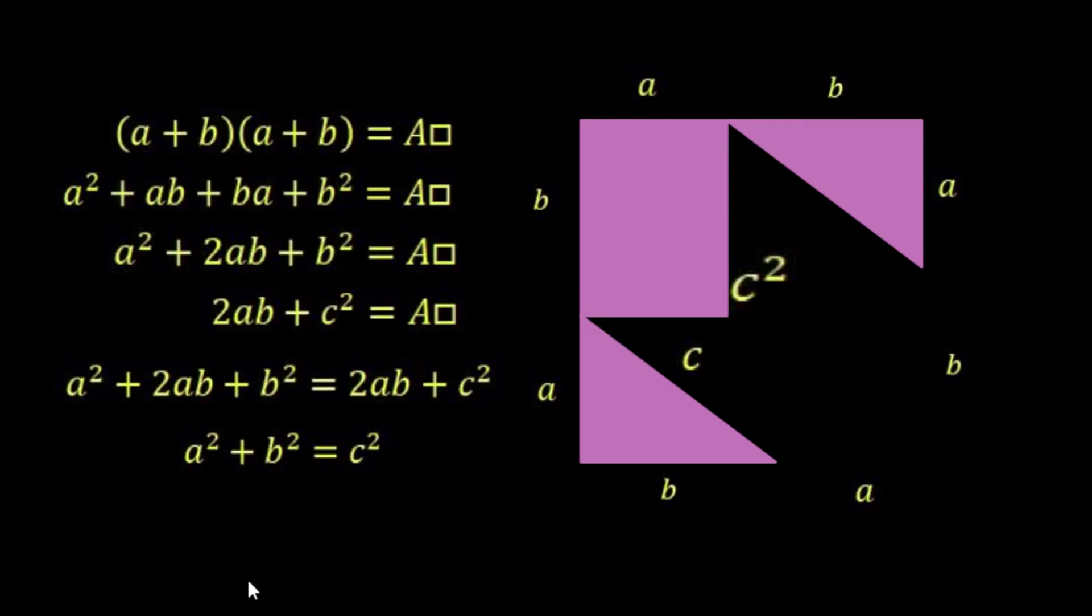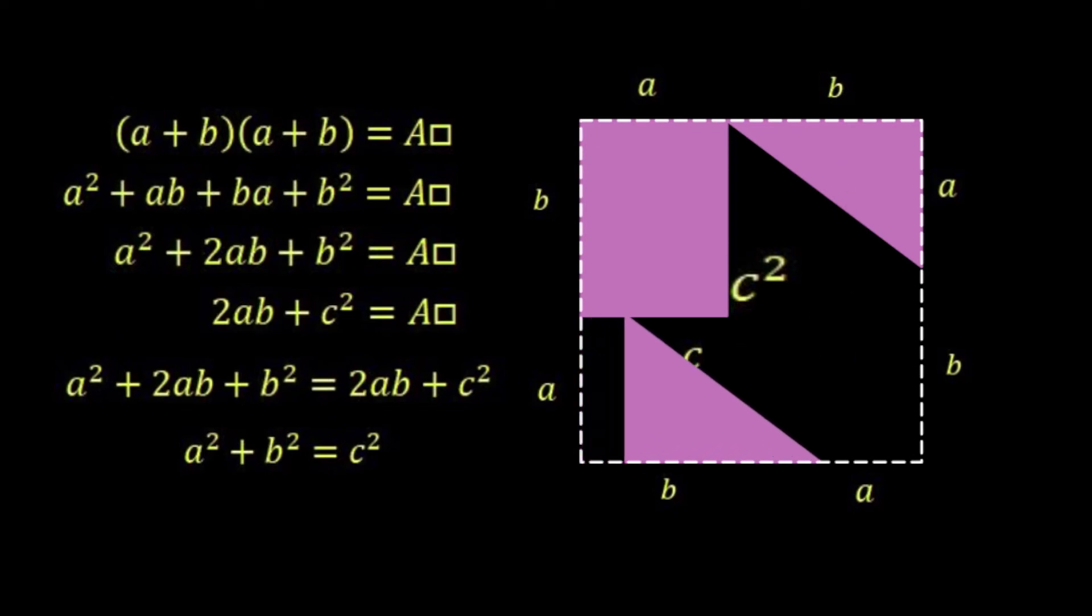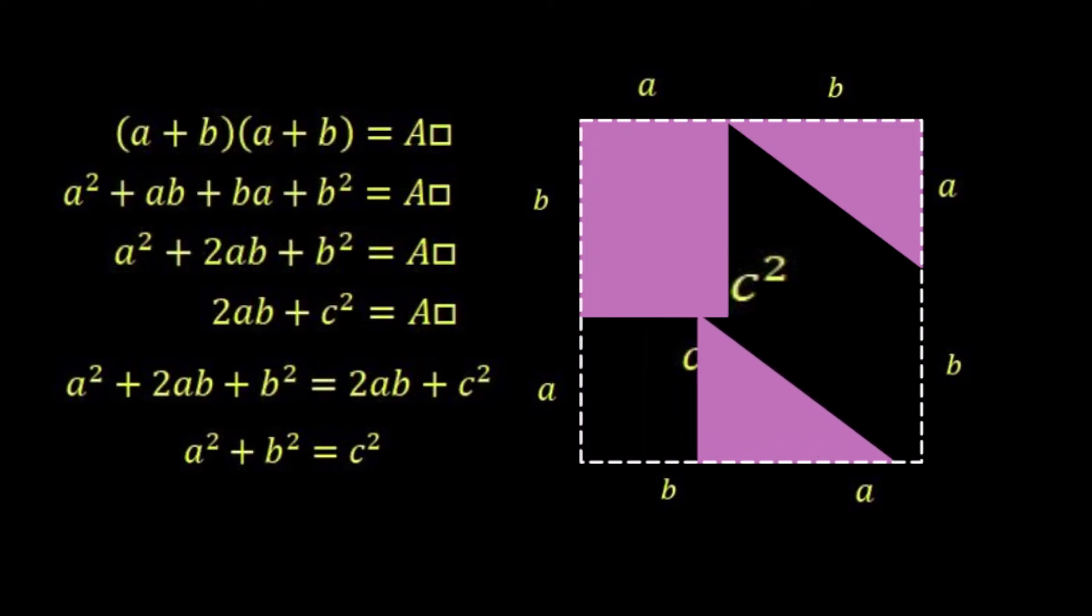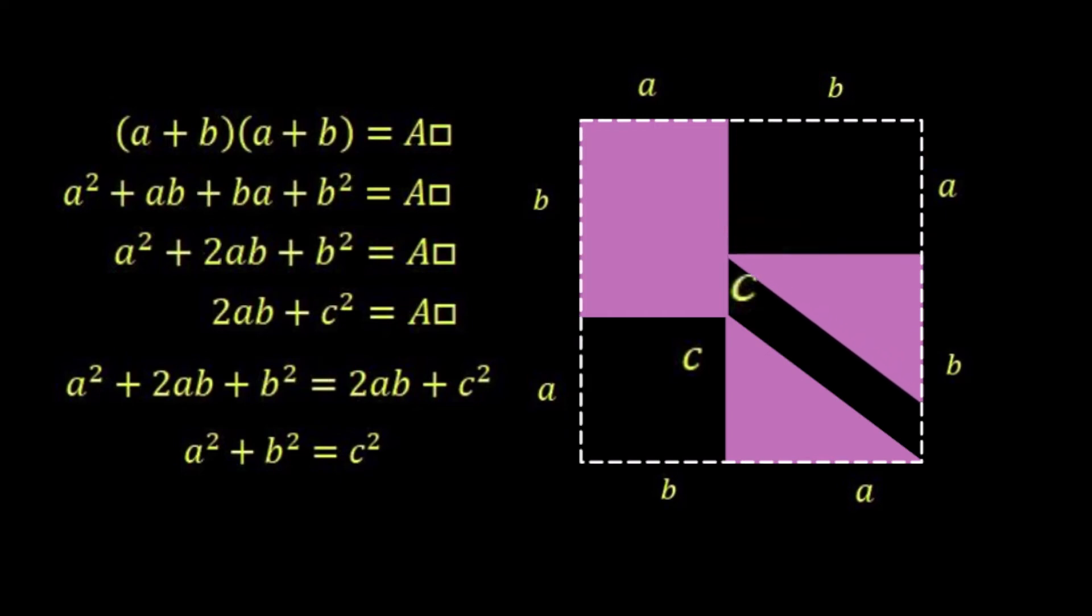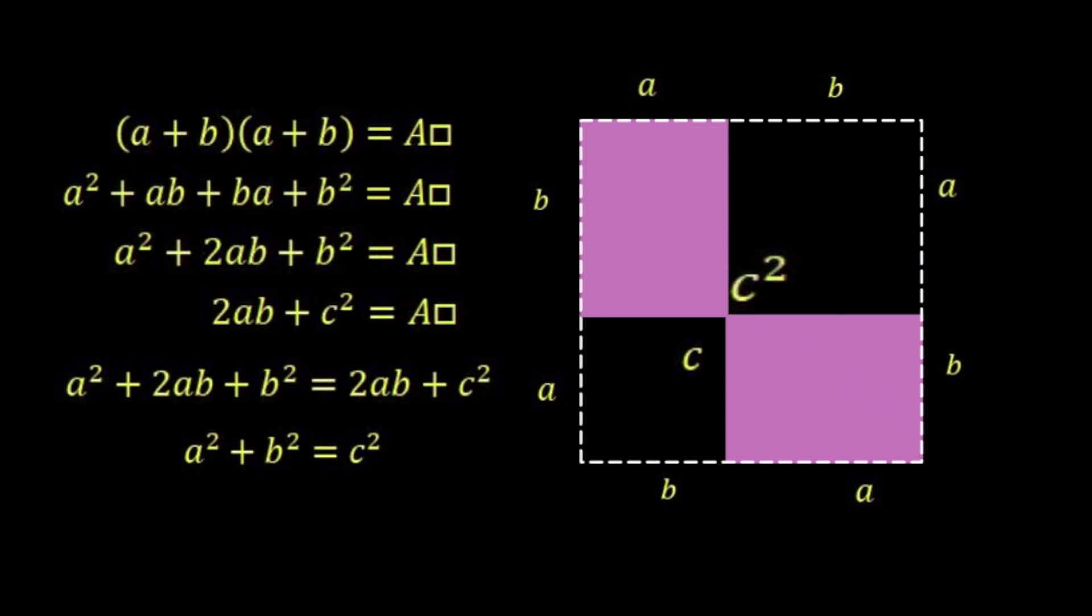Now I can also move this triangle here over to here and I can shift this one down. So we can shift this over here and we can shift this one down. So again, no triangle has left the original square and there's no overlap. So it means that the black area here is still c², but again, it's just a different shape.